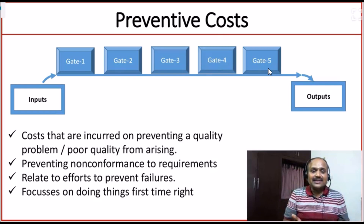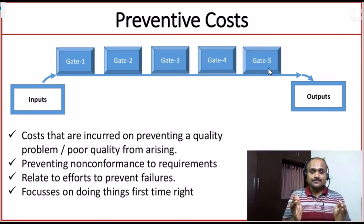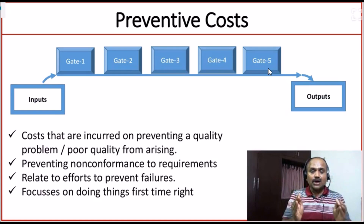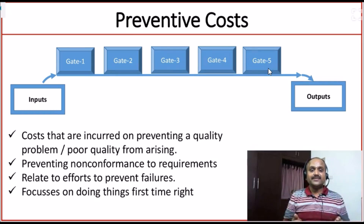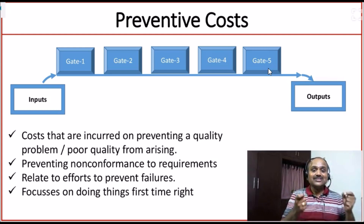At each gate you have inputs and outputs — the output of gate 1 may be the input to gate 2. As part of preventive cost, you define the process, specify the equipment to use, and describe how activities are to be performed. The team on the ground must appreciate the process because those steps come from earlier experience — they are the lessons learned. Preventive cost focuses on doing things right the first time, preventing non-conformance from day one of product development. Activities under prevention cost include quality planning, training, design reviews, and developing and installing test equipment at various gates.